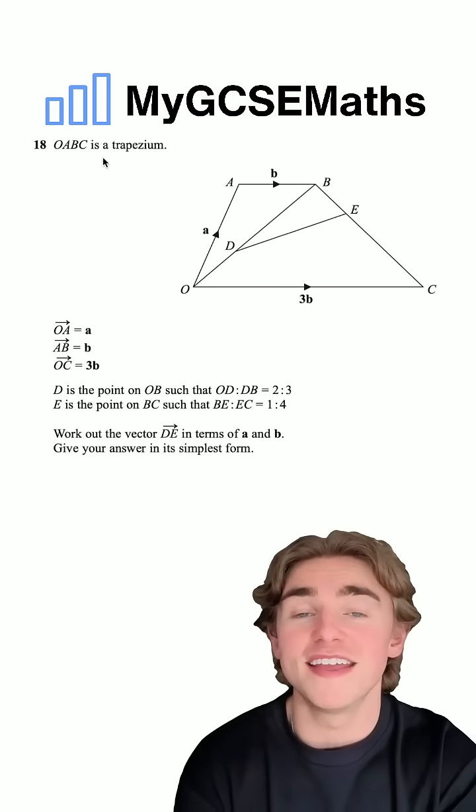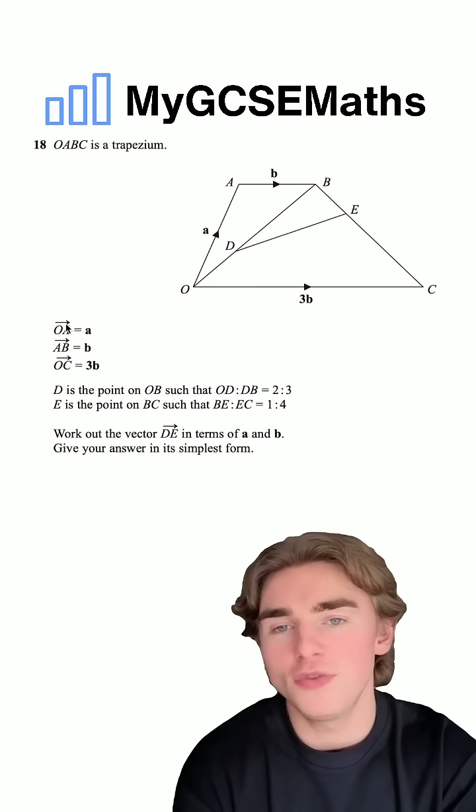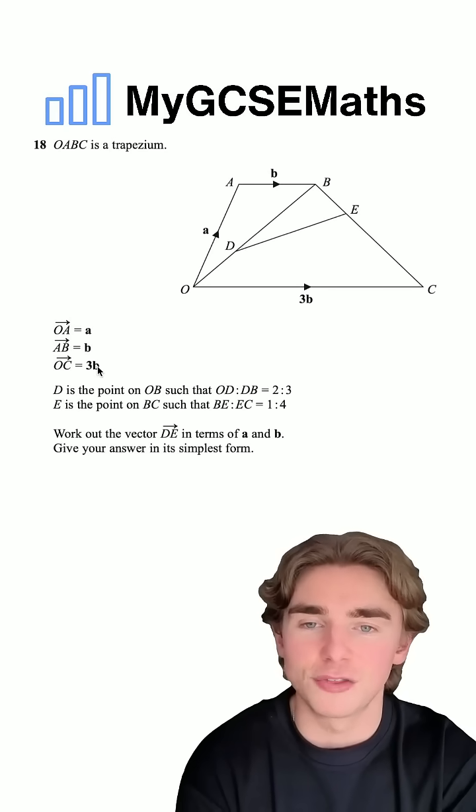The question says that OABC is a trapezium. We're told that OA is A, AB is B, and OC is 3B.